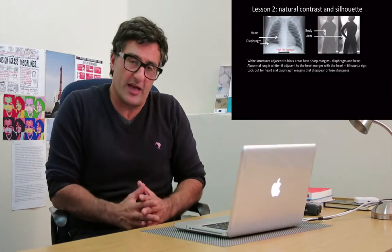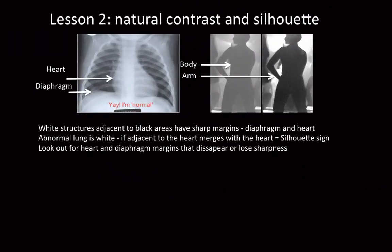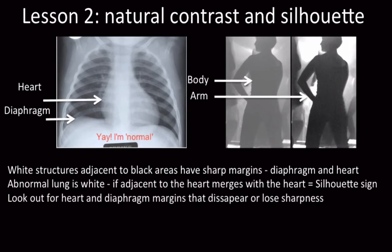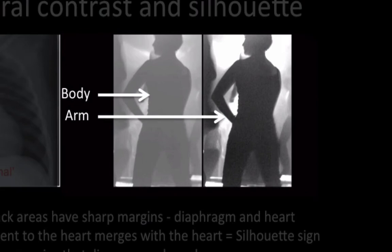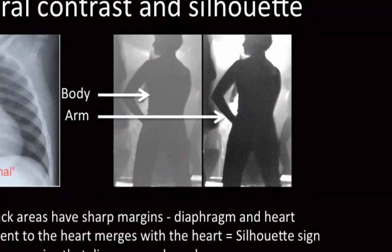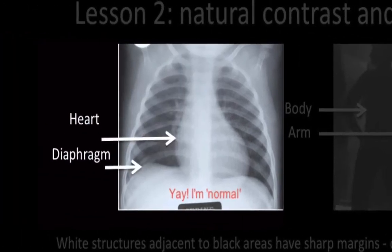The next lesson is a spin-off of that but a little more complicated. People talk about a silhouette sign, and it's difficult to conceive whether they're talking about an outline like a lady's silhouette or a shadow. You can see two different levels of contrast — the natural distinction between black and white. When there is a white structure next to a black structure, the margin between them is very clear. You should be able to take a pencil and draw the outline of the heart and the diaphragm — the cardiac and diaphragmatic margins lying adjacent to very black, aerated, healthy lung. These margins, or the silhouette, are very clear and easy to see.